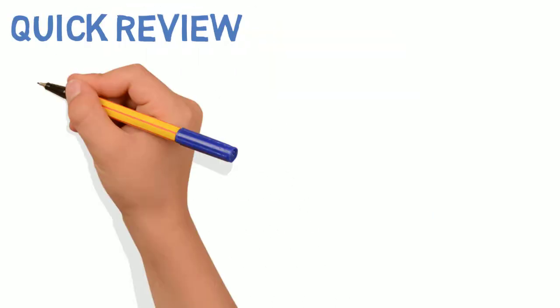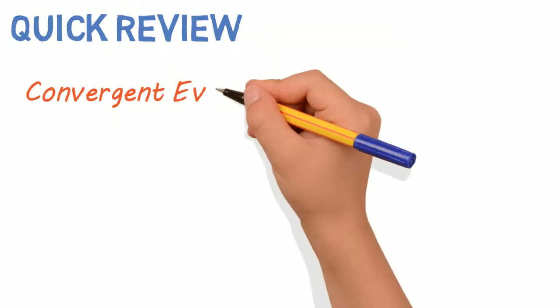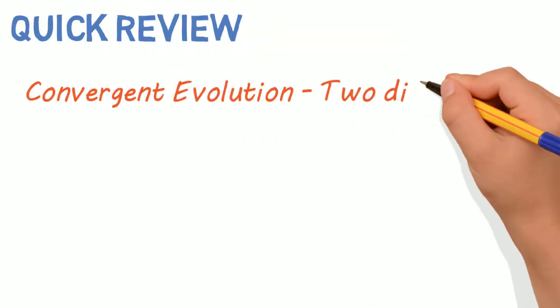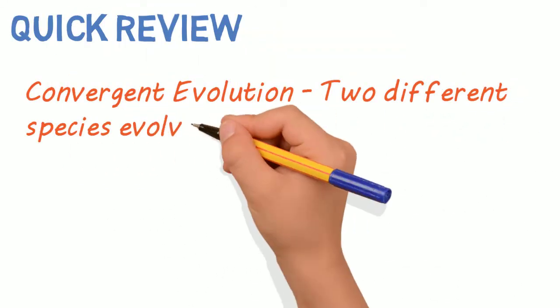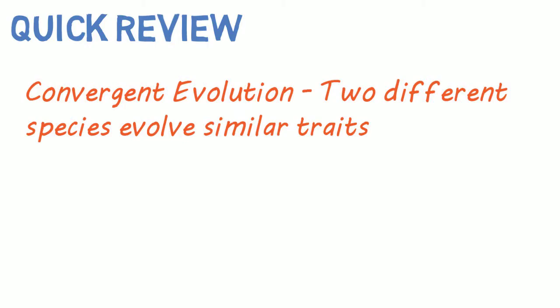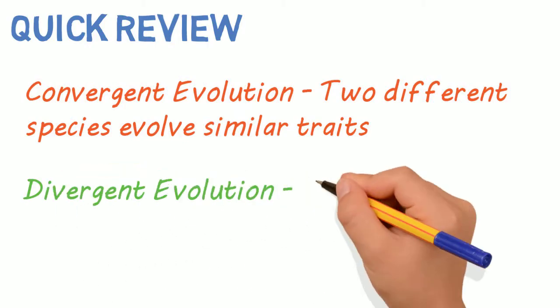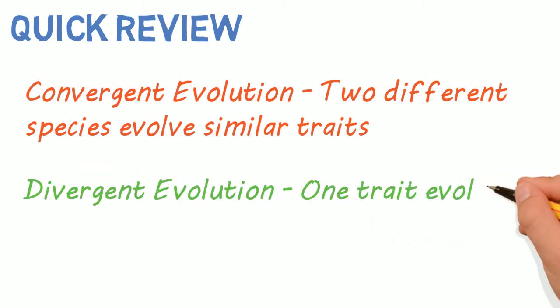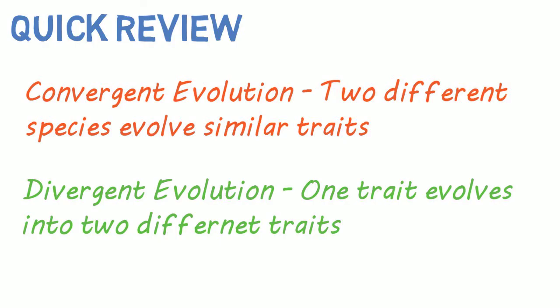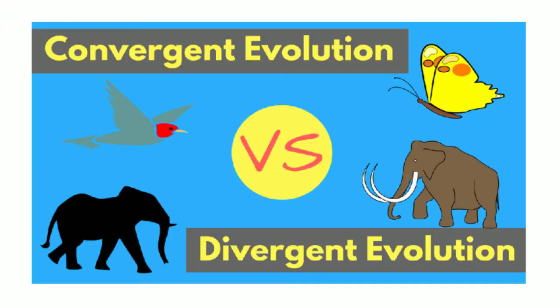If you remember, convergent evolution occurs when two different species evolve similar traits, and divergent evolution occurs when a trait in a species evolves into two separate traits, eventually resulting in two separate species. For more detail on these, check out my video on convergent versus divergent evolution.